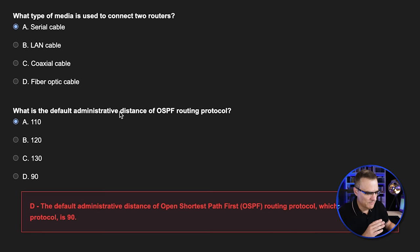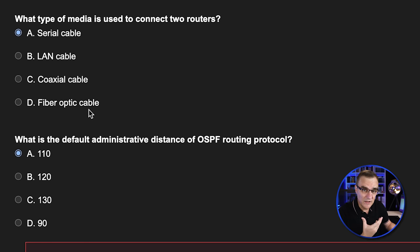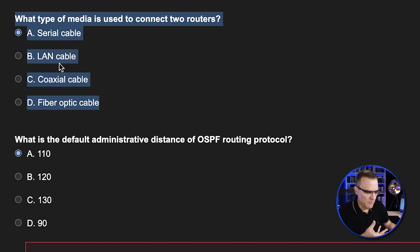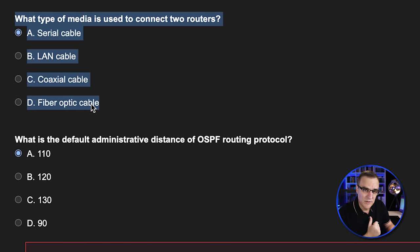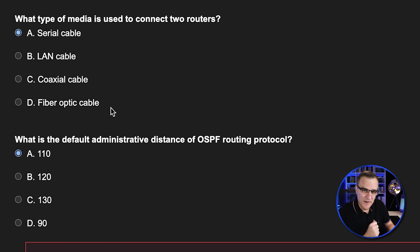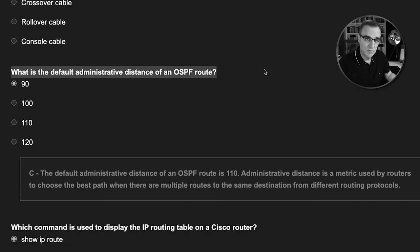Things are starting to look a little off. It tells me the cable used to connect two routers is a serial cable — that may have been true in the old days, but these days we typically use Ethernet. They don't really give us the right answer either — what is a LAN cable? Is that an Ethernet cable, coaxial cable, fiber optic? Fiber could be used on the LAN, coaxial could be used on the LAN, or are we talking about UTP? And here's another example with OSPF — we're now told the default administrative distance of OSPF is 90, but if you remember the first example where the AI wasn't hallucinating, it gave us a different answer.